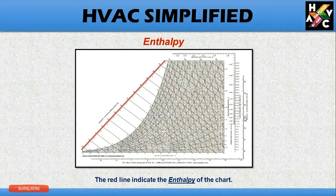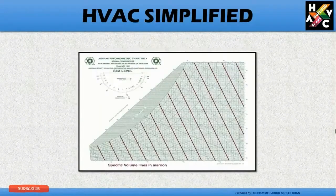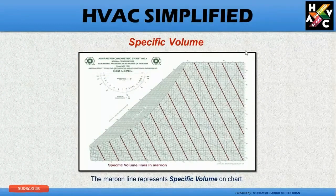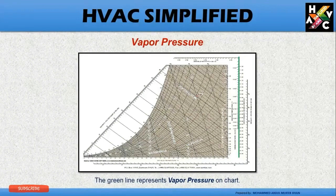Enthalpy. The red line indicates the enthalpy on the chart. Specific volume. The maroon line represents the specific volume. The green line. Vapor pressure. The green line represents the vapor pressure on the chart.